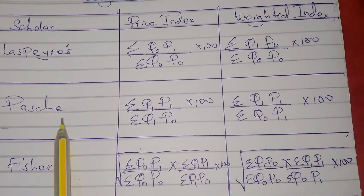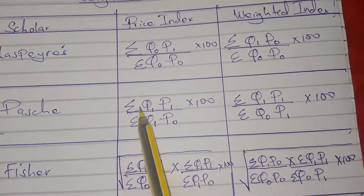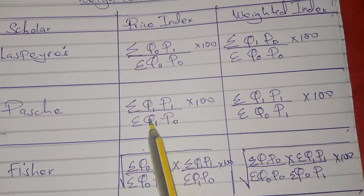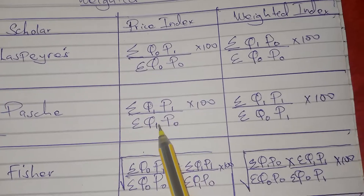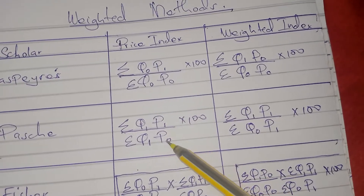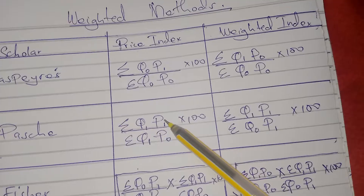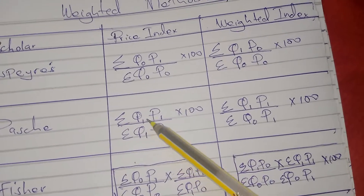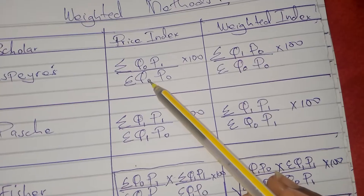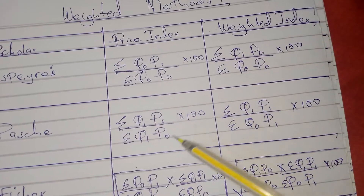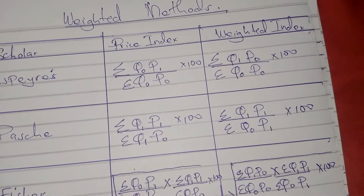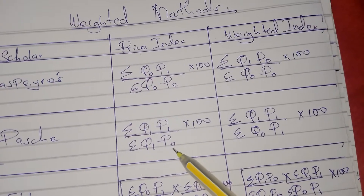The next scholar is called Paasche. His price index is: summation of q1 times p1, divided by summation of q1 times p-naught. He concentrates more on the current year. For his price index, prices are changing from p-naught to p1, but quantities are constant at q1, q1. So Paasche makes the quantity of the current year constant, while Spayless makes the quantity of the base year constant — this is the key difference between their formulas.